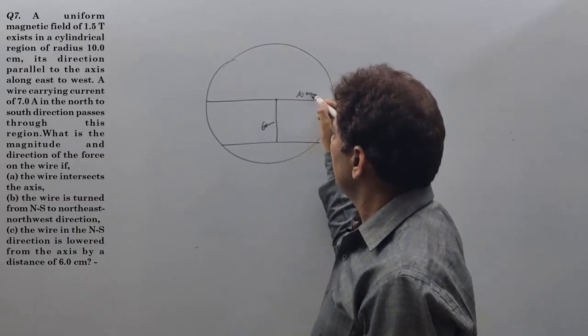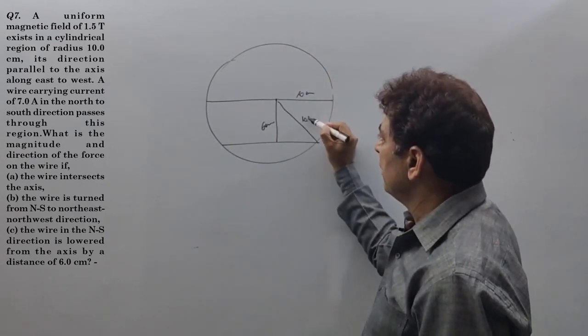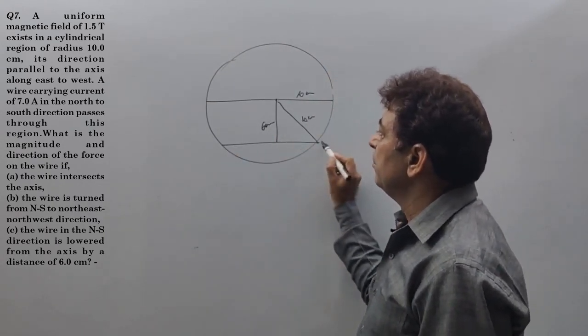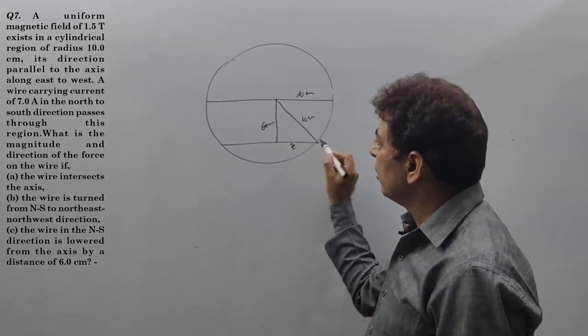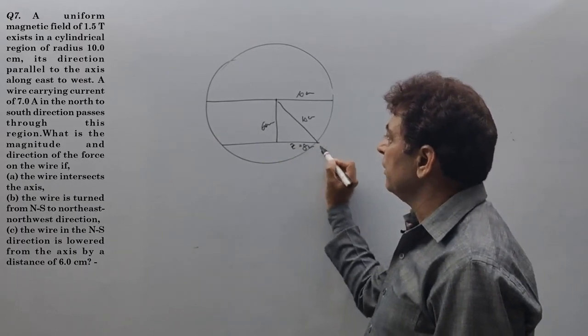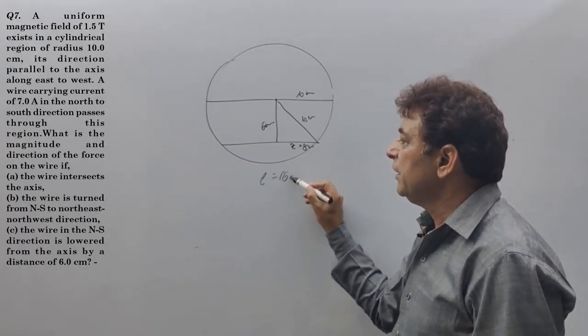So this is 4 cm. This point is 10 cm, it is a diameter. Radius is 10 cm. This is a diameter. The length is 16 cm.